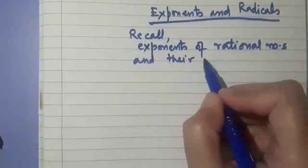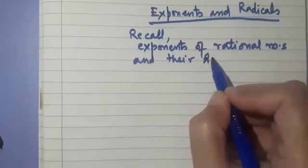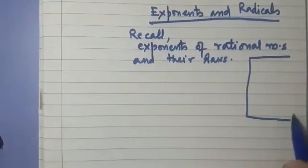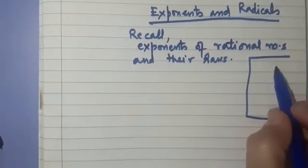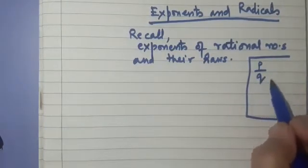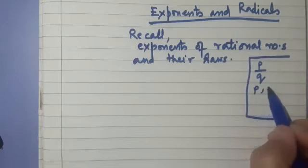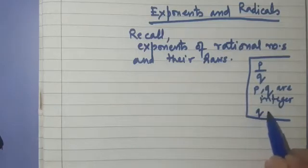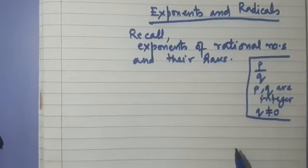What are rational numbers? Rational numbers are the numbers which can be expressed in the form p by q, where both p and q are integers and q, that is the denominator, is not equal to 0. This is the definition of a rational number.